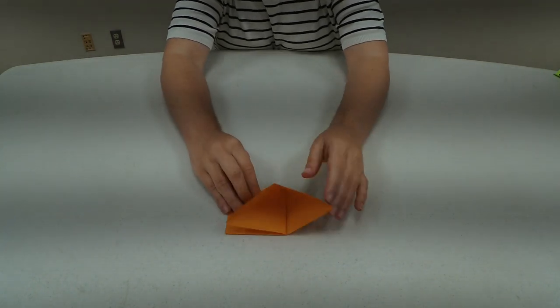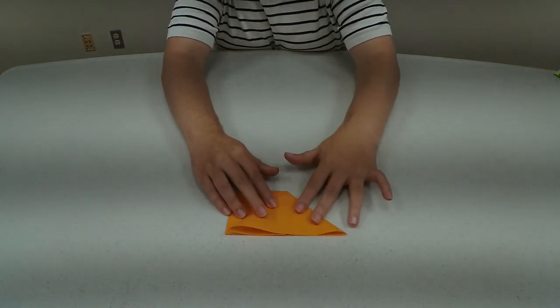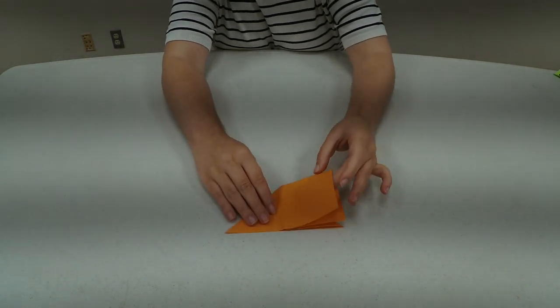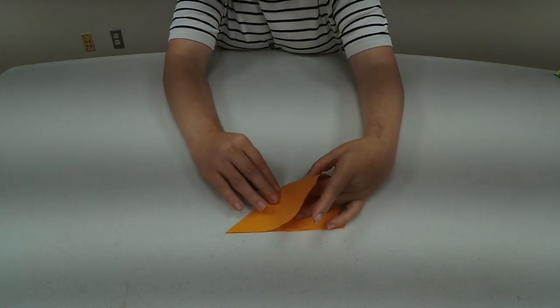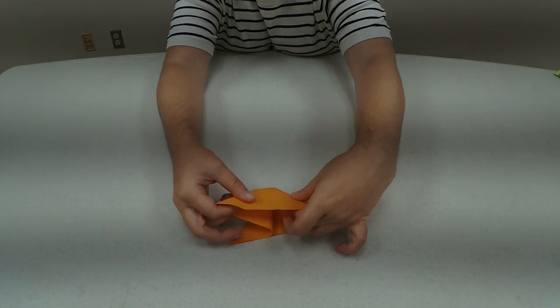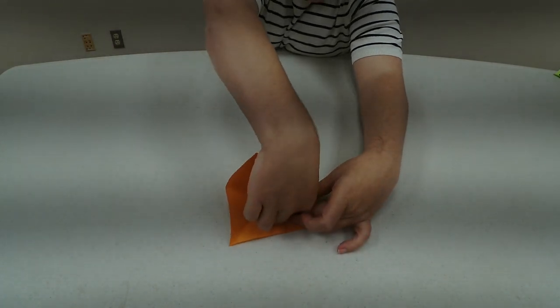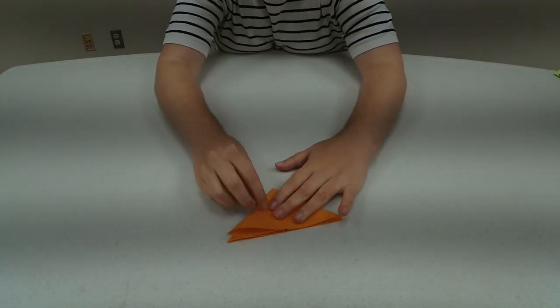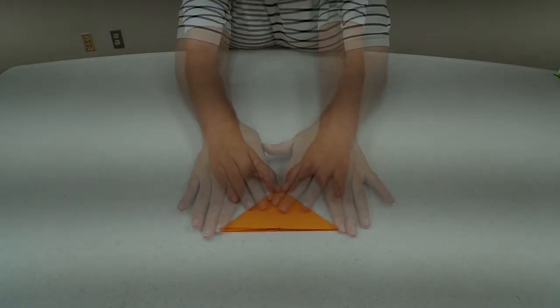Then you're going to take this piece, pull it out, create a triangle. And you're going to flip that over and do that on the other side as well. So you have a triangle.